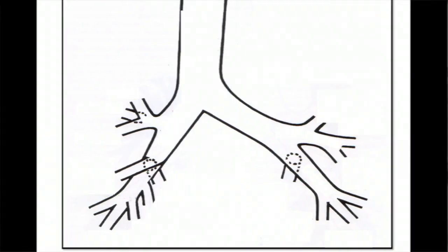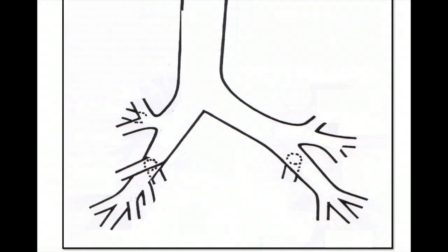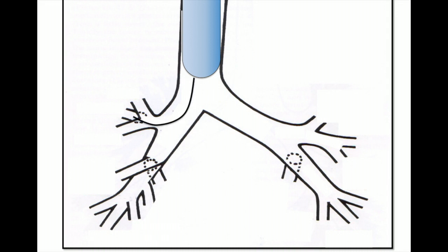This diagram summarizes the process of obtaining cryobiopsy. After confirming the location of the target, an endobronchial balloon is placed proximal to the target segment to tamponade bleeding.